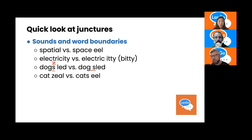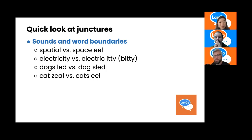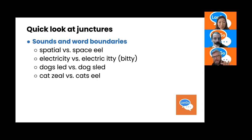Our next example is 'cat zeal' versus 'cats eel.' 'Cat zeal' refers to one who loves cats — zeal being a fervor or excitement for something. 'Cats eel' refers to cats, plural or possessive, plus an eel, the fish that looks like a snake. Again, the difference between the S and Z sound tells us where the word boundary is.